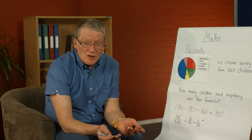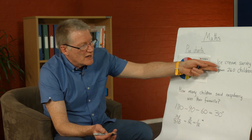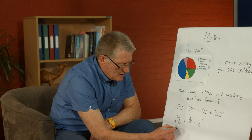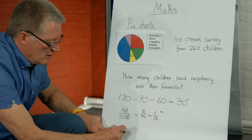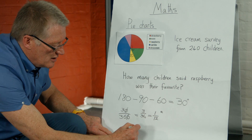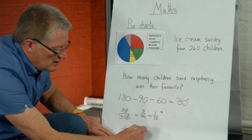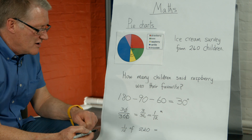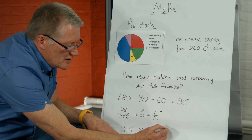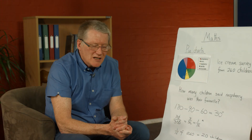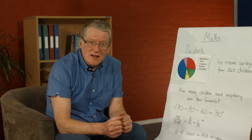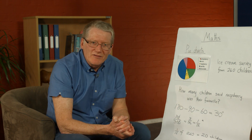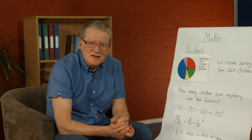Now we know the number of children is going to be 1/12 of our total number of students — 1/12 of 240. That's the same as 240 divided by 12, which equals 20. So that's demonstrated how to find an angle first, and then use that angle as a fraction of a whole pie chart to relate it back to the data and find, in this case, the number of children that liked raspberry ice cream.